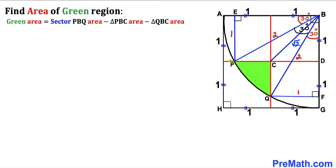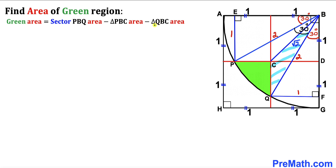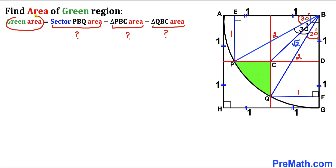We are interested in calculating the area of the green shaded region. We can see that this area equals the area of sector PBQ, minus the area of triangle PBC, minus the area of triangle QBC. So our task is to calculate each of these three areas.